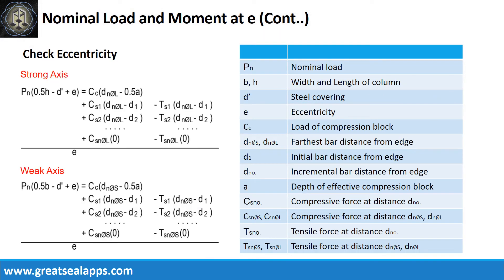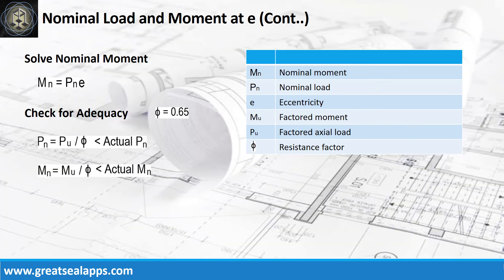Perform a final check of eccentricity from the given computations. Solve the nominal moment from the nominal axial load and eccentricity. To check for adequacy, the design axial load should be less than the actual load capacity, and the design moment should be less than the actual moment capacity.